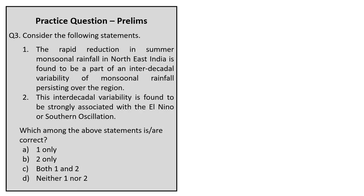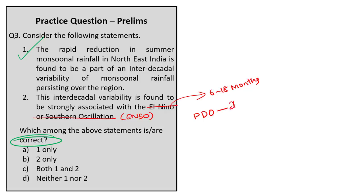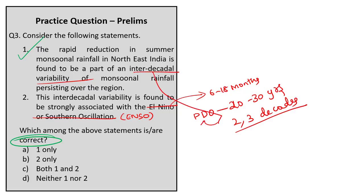Question 3 presents two statements and asks which are correct. Statement 1 says the rapid reduction in summer monsoonal rainfall in Northeast India is part of interdecadal variability of monsoonal rainfall persisting over the region — this statement is correct. Statement 2 says this interdecadal variability is strongly associated with El Niño or Southern Oscillation — this is wrong, because El Niño persists for 6 to 18 months whereas the relevant variability here is associated with the Pacific Decadal Oscillation which persists for 20 to 30 years. The correct answer is option A, statement 1 only.